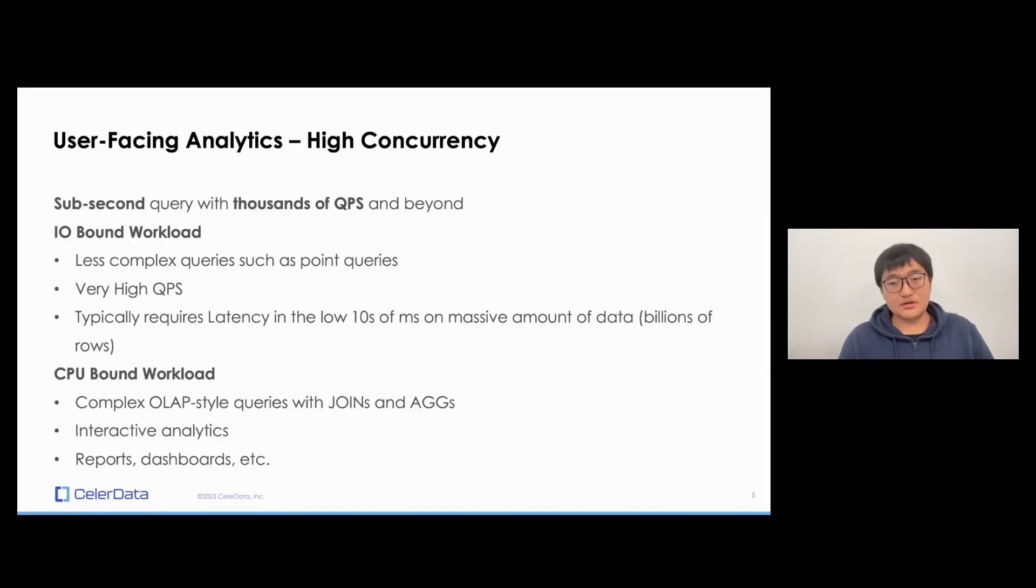And for CPU bound workload, these are CPU becoming the bottlenecks. Your queries are more complex, and they're more like OLAP style queries with a bunch of joins and aggregations. And because the queries are intense, they're sometimes for reports, a lot of them are for dashboards and reports, and so you want the latency to be at least interactive. So here I want to say interactive is maybe the query returns during the attention span of a normal human being, like a second or sub-second or in the low seconds. And normally for these kind of workload, the QPS is not that high.